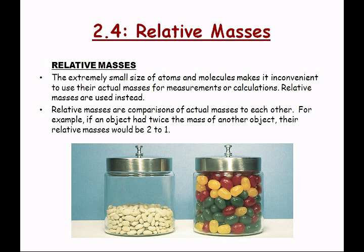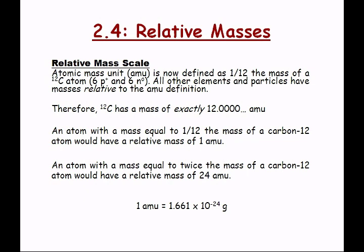We use a new unit called the AMU — atomic mass unit — or 'u.' Relative masses are a comparison of actual masses to each other. For example, if an object had twice the mass of another, the relative masses would be 2 to 1. The AMU is defined as 1/12th of the mass of a carbon-12 atom, so carbon-12 is exactly 12.000 AMU. One AMU represents the mass of either one proton or one neutron.